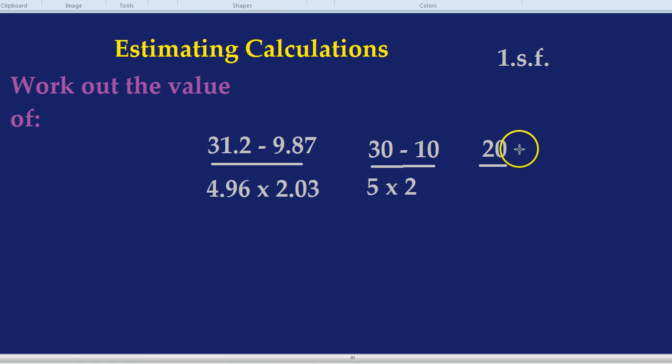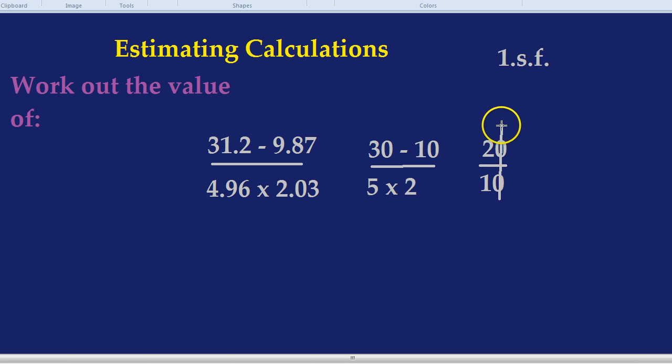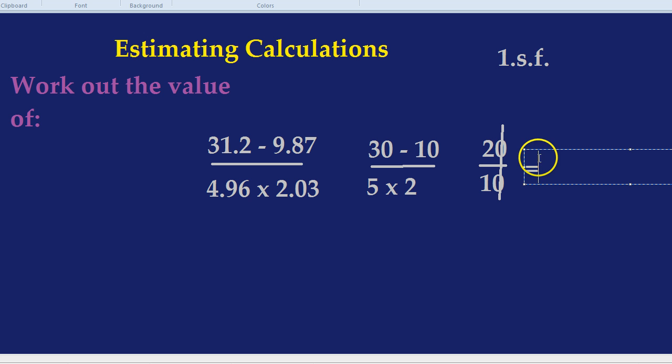30 minus 10 is 20 and 5 times 2 is indeed 10. And what is 20 divided by 10? 20 divided by 10, if you're not sure you can knock off the zeros. 2 divided by 1 is just 2. So this equals 2.